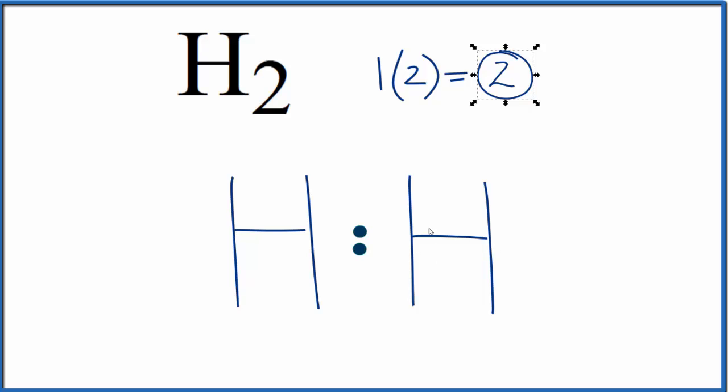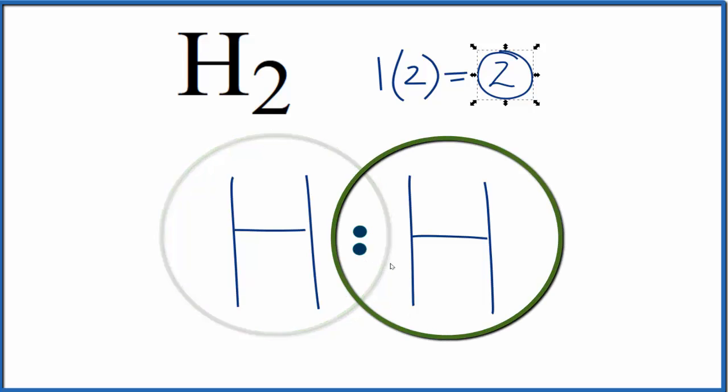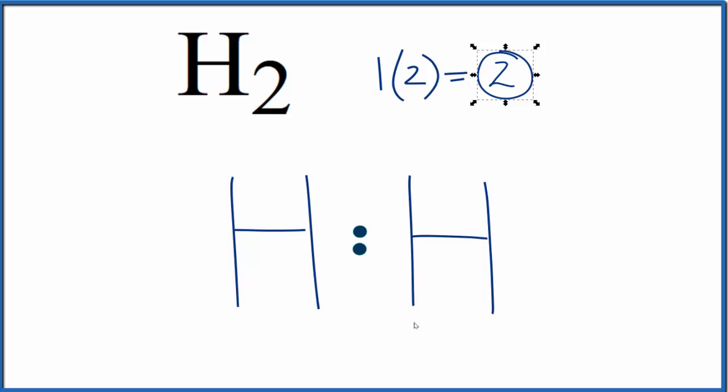Hydrogen only needs two valence electrons to have a full outer shell. So in this case, this hydrogen right here, it has a full outer shell. It has two valence electrons. And this hydrogen here, it has two valence electrons. So by sharing these electrons, we end up with this Lewis structure for H2, diatomic hydrogen, also called molecular hydrogen or just hydrogen gas.